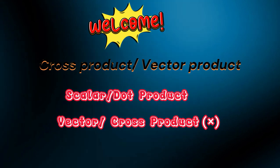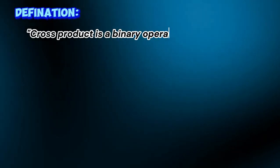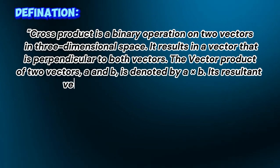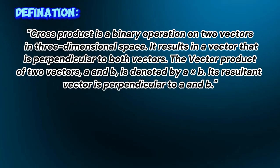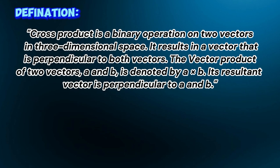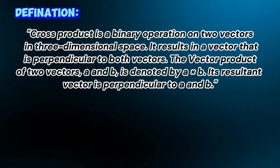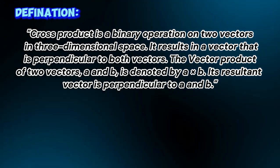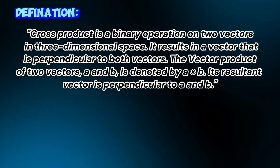Let's check the definition. Cross product is a binary operation on two vectors in three-dimensional space. It results in a vector that is perpendicular to both vectors. The vector product of two vectors, a and b, is denoted by a cross b. Its resultant vector is perpendicular to a and b.